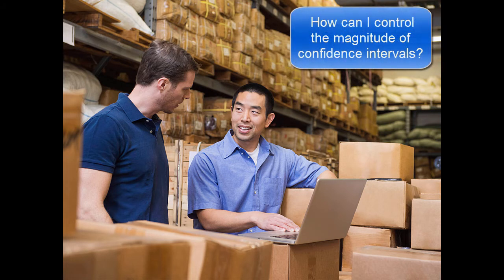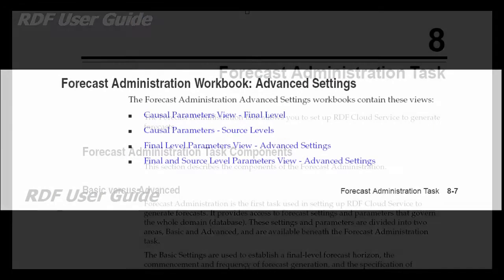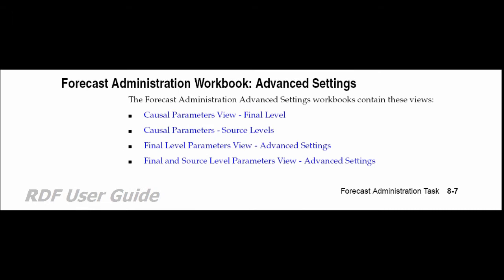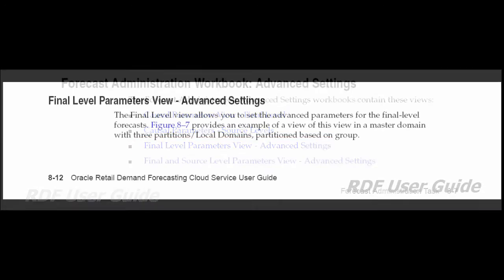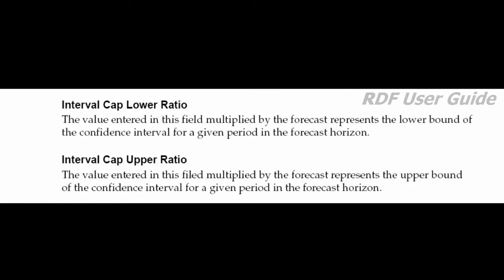These confidence intervals may affect replenishment. If too high, you may build up too much inventory during the selling season. To deal with this, RDF offers several ways to control the magnitude of the confidence intervals. The forecast administration task in the guide provides the necessary information to help control these confidence intervals, including information about the final level parameters view advanced settings, and the interval cap lower and upper ratios.